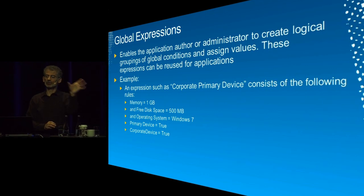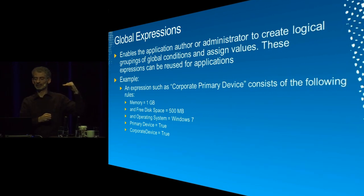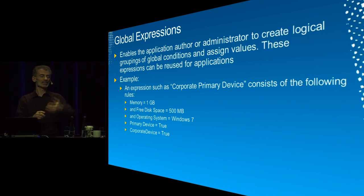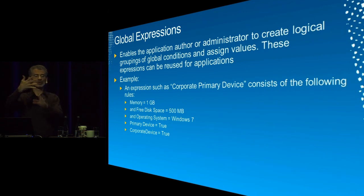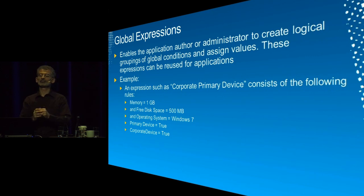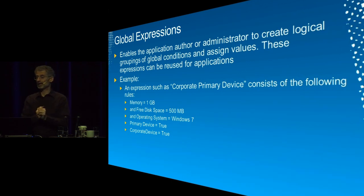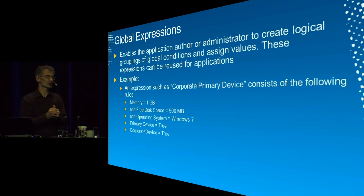Conditions are individual attributes. You can also create expressions — a single entry with multiple conditions. For example: memory 512MB, free disk space 500MB, OS is Windows 7, primary device equals true, and corporate device registry key is true. You can take these five conditions, add them as one expression named 'corporate primary device equals true,' and all five must evaluate to true. If any one is false, the entire expression is false and the deployment type is not valid. This lets you create reusable templates for specific device conditions.